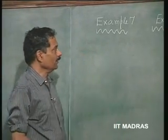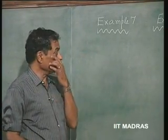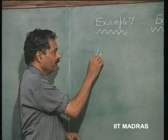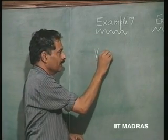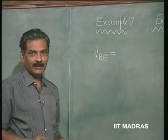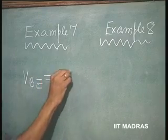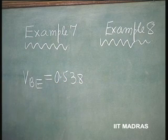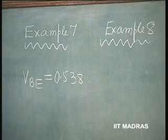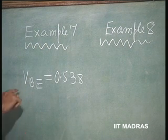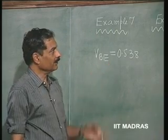In the last class, we solved Example 7 and Example 8. In Example 7, VBE comes out as 0.538 and not 0.63 as indicated earlier. So please make this correction and accordingly the other values will be adjusted. Please calculate.